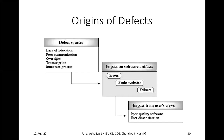Due to these errors, defects, or failures, software will be generated but the quality of that software will be poor — not up to the mark. This will lead to poor quality software, due to which the user's interest will reduce. The customer will be diverted to a different company, leading to user dissatisfaction. These are the origins of defect and their impact as mentioned in the software artifact and user's view.